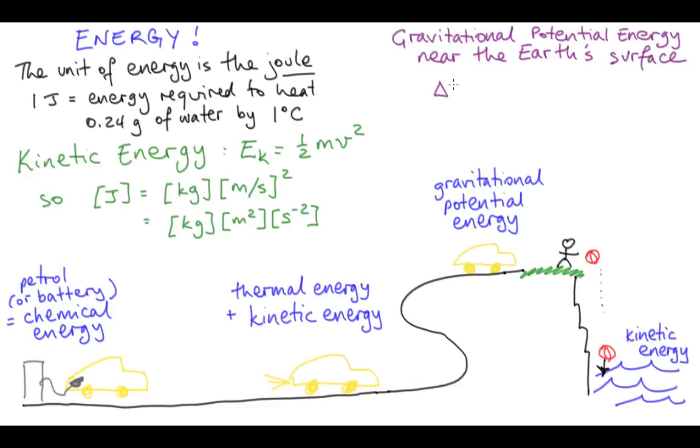For objects near the surface of the Earth, changing the height of an object corresponds to a change in gravitational potential energy proportional to the object's weight as follows. Remember, little g here is acceleration due to gravity at the Earth's surface.